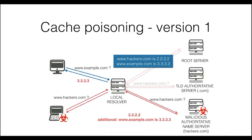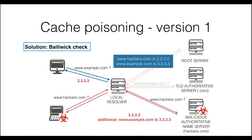This issue has been solved by introducing the so-called bailiwick check, meaning that the local resolver checks that the additional section only contains information about the same domain as the requested one. If this measure is in place, the local resolver will ignore the update about example.com because it was carried in a reply related to acres.com.